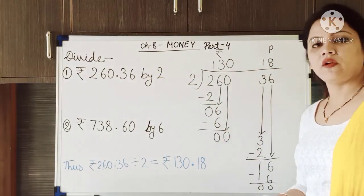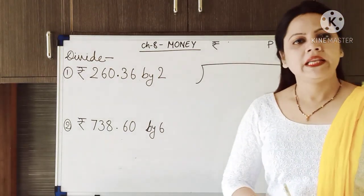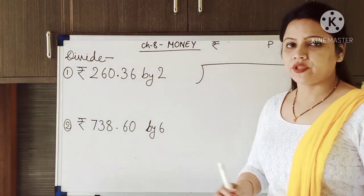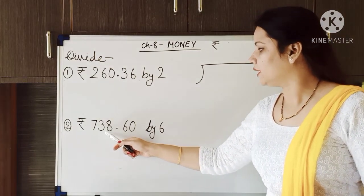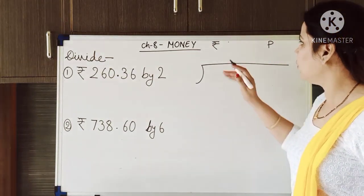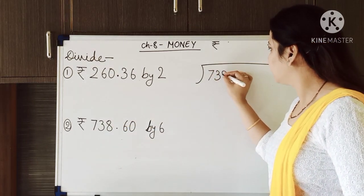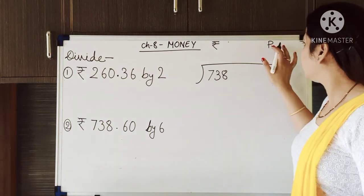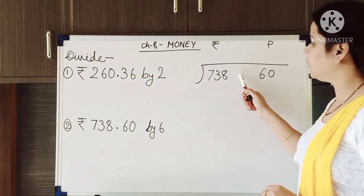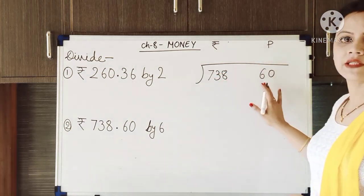So, like this you have to solve. Just pause this video and write this example in your maths notebook. Now we will solve the second question. The amount given is rupees 738.60 and we have to divide it by 6. Under the rupees column we write 738, and under the paise column we write 60. While doing the calculation, we don't need to put the dot, because it is already mentioned which is rupees and which is paise. The divisor is 6.